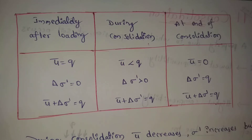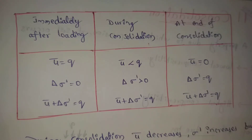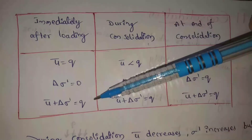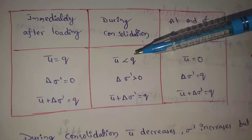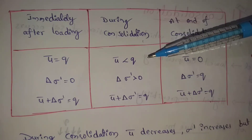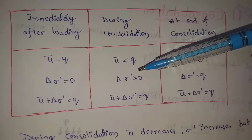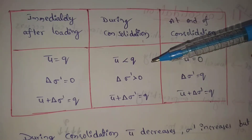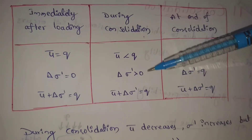During consolidation — consolidation is in progress — u-bar is less than q (less than the intensity of loading). And the change in effective stress, delta sigma-dash, is greater than 0. The total, u-bar plus delta sigma-dash, is approximately equal to q.